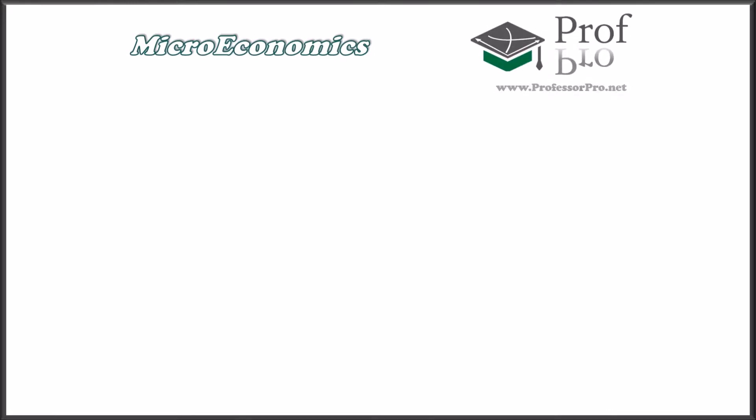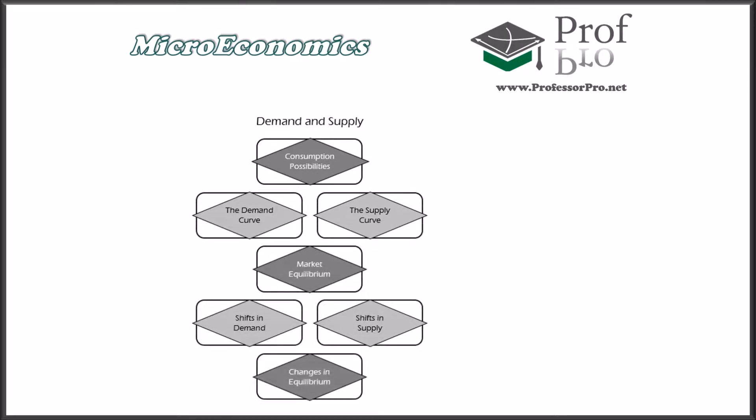This material is part of our course Microeconomics. You can find more at ProfessorPro.net. The current video belongs to Unit 1, Demand and Supply, and covers the class Consumption Possibilities.